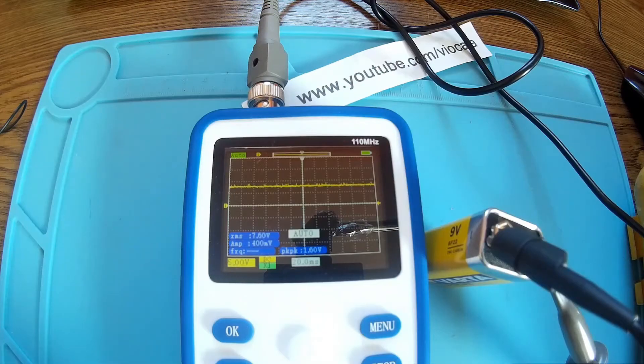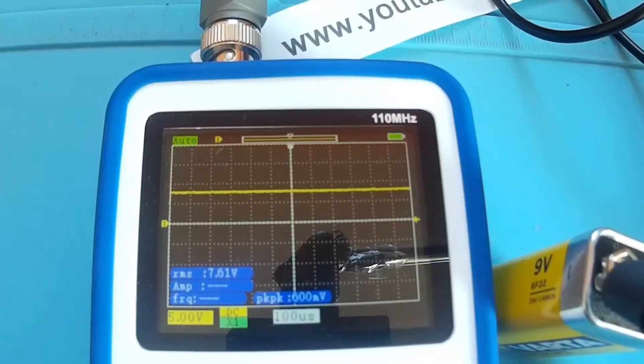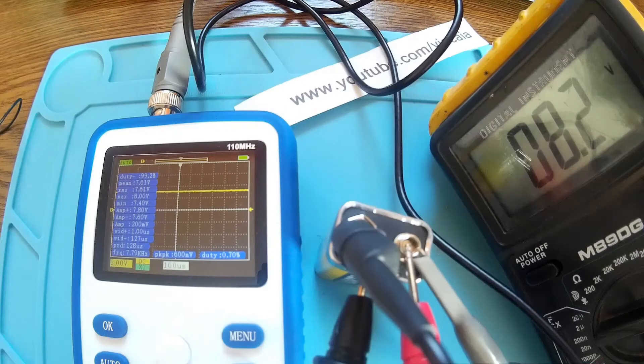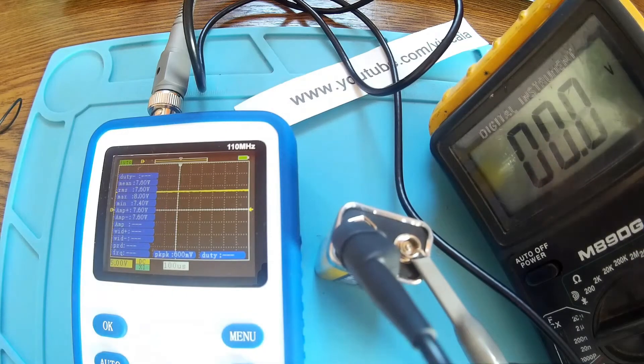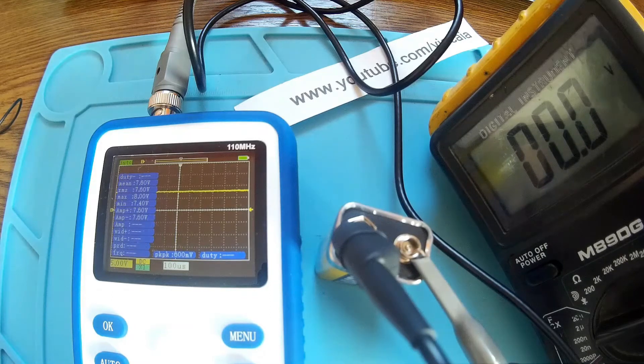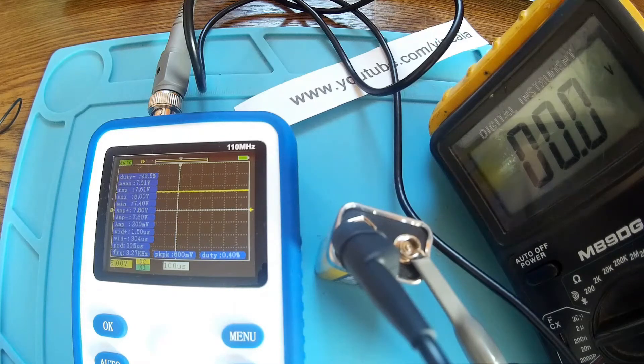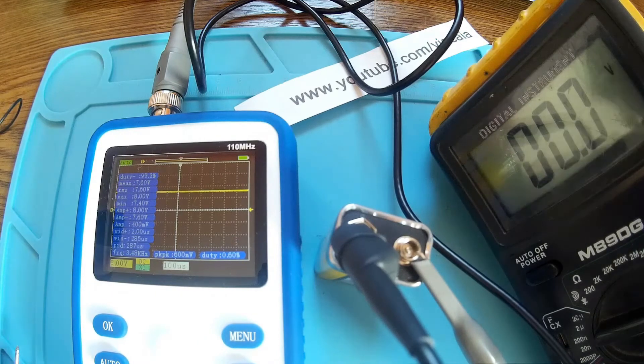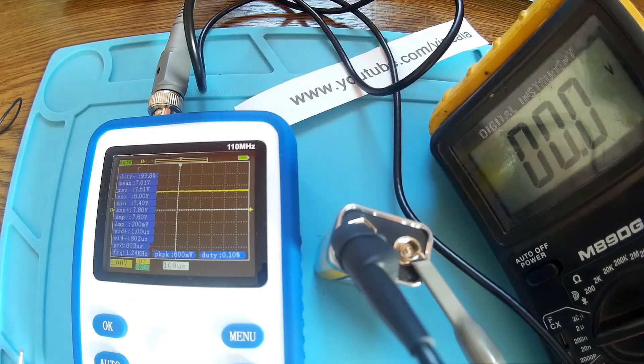We have like 7.61 volts. Let's see the voltmeter: 8.2. And this one says 7.61. It's a little bit lower than it should, so we have like 94%, about 6% difference.